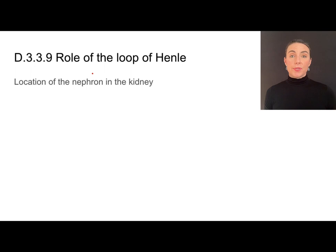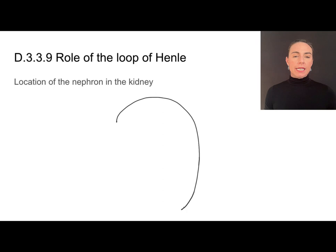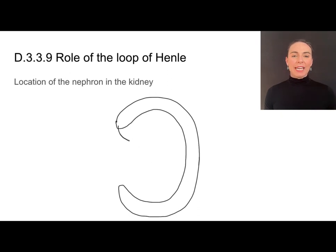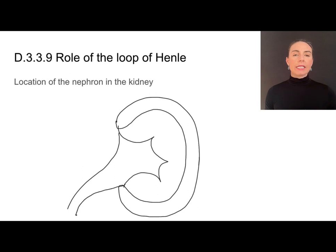In order to really understand how the loop of Henle works, we need a good idea of where the nephron is located in the kidney. The kidney has a couple of different regions: an outer part called the cortex, a middle layer called the medulla, and an area in the center called the renal pelvis. The renal pelvis collects all of the filtrate and sends it through the ureter where it is excreted as urine.